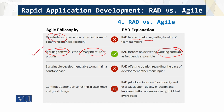Agile calls for sustainable development at a constant pace — constant is the key word — but RAD has no opinion about the pace of development, whether it should be fast, variable, or constant. Agile also emphasizes continuous attention to technical excellence, whereas in RAD the focus is on functionality, not excellence. So there are clear differences there.